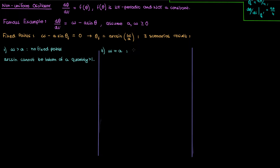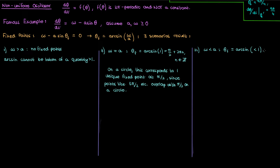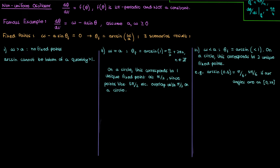In the third scenario where ω < a, we have arcsin of something less than 1. On a circle this corresponds to two unique fixed points, since the arcsine of a value less than 1 yields two distinct angles between 0 and 2π. For example, arcsin(0.5) gives both π/6 (30°) and 5π/6 (150°), so it should make sense that taking the arcsine of something less than 1 yields two unique values when considering flows on a circle.